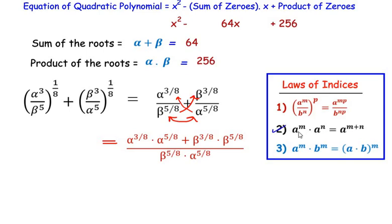The second law of indices states: when bases are the same and there is multiplication, the powers get added — a^m × a^n = a^(m+n). The third law states: if bases are different but powers are the same, we can multiply the bases and keep the same power. In the denominator, alpha and beta are different bases, so we apply the third law.